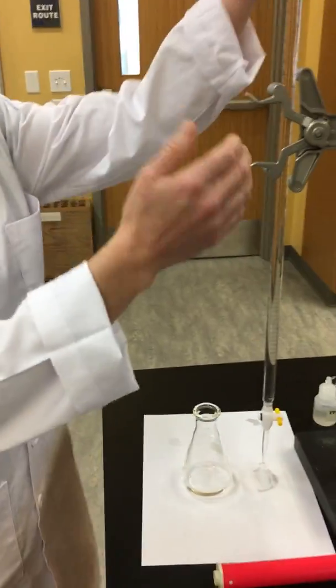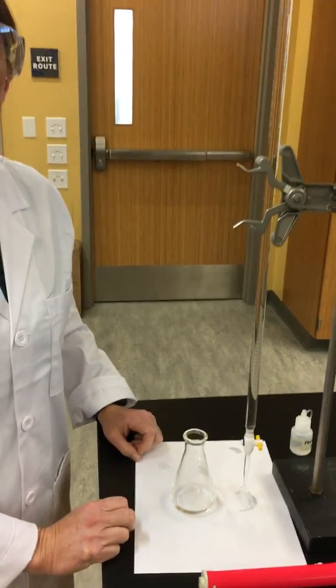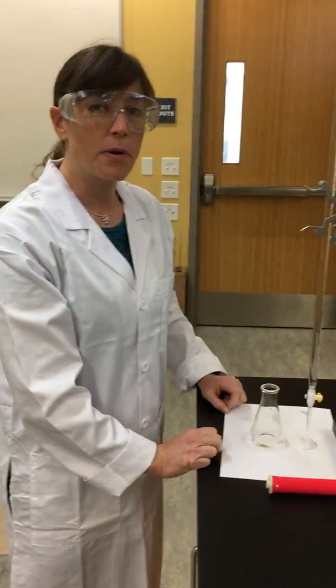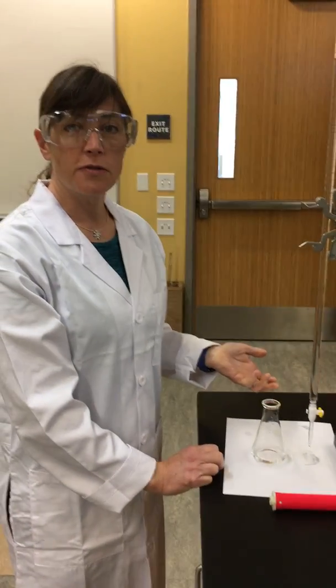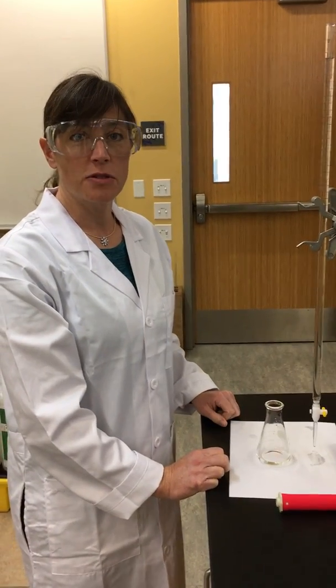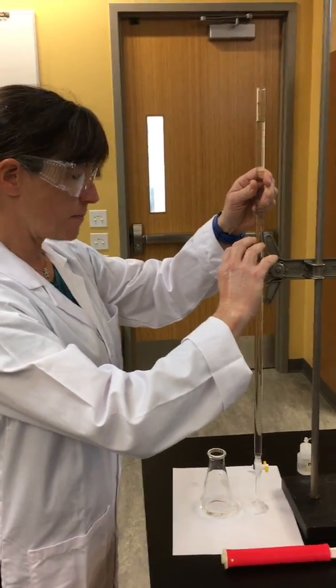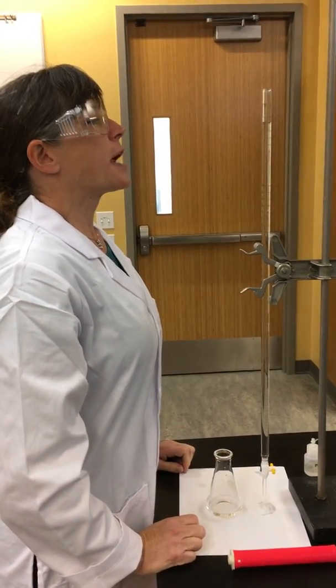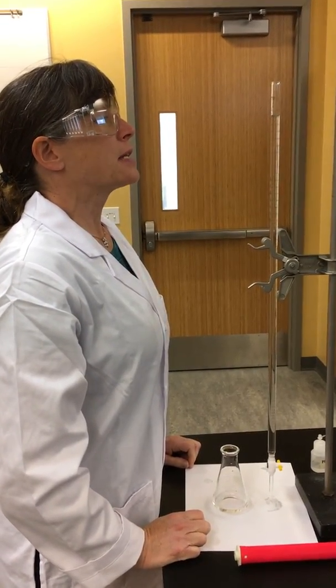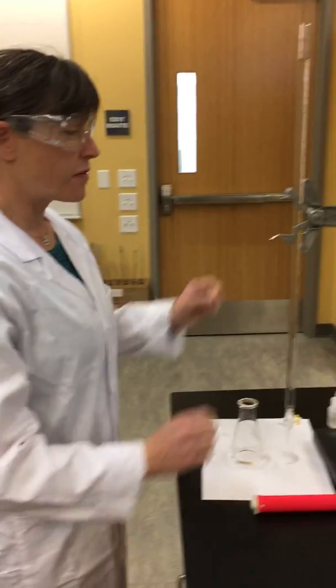I already have our burette filled with the same sodium hydroxide solution that we determined the concentration in part A. So what we're going to do first is record the initial volume of sodium hydroxide. We'll bring it down to our eye level. And we have 0.90 milliliters as the initial volume.